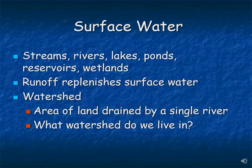Surface water includes streams, rivers, lakes, ponds, reservoirs, and wetlands — replenished by runoff. A watershed is an area of land drained by a single river. Depending on where you live along the Wasatch Front, you could be in the Jordan River watershed, the Weber River watershed, or the Bear River watershed. Watersheds get smaller as you move up into mountains, contributing to larger rivers downstream. At the largest continental scale, watersheds drain into the Atlantic, Pacific, or Arctic Oceans.